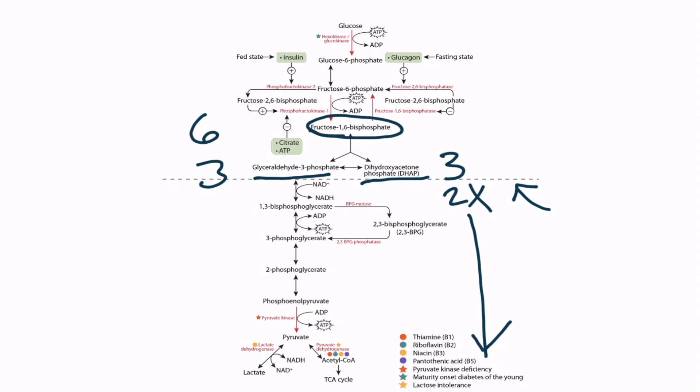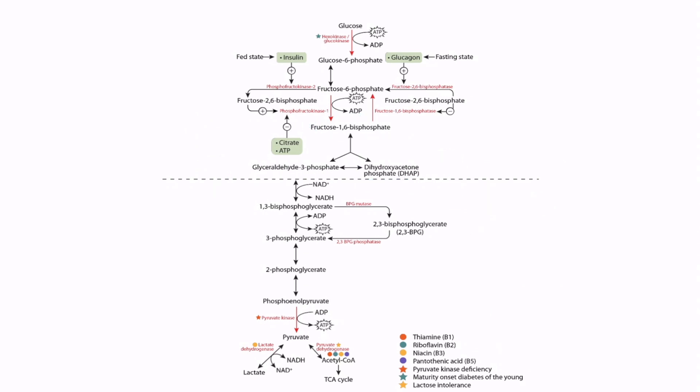With this in mind, let's review the first steps of the pathway. In the last video, we discussed hexokinase and glucokinase, which catalyze the first reaction of glycolysis, converting glucose to glucose-6-phosphate. This reaction has a star next to it. You should know that decreased function of glucokinase is associated with maturity onset diabetes of the young.